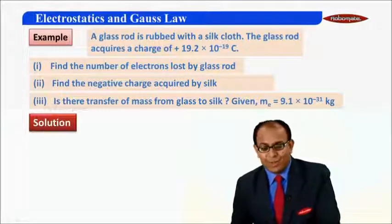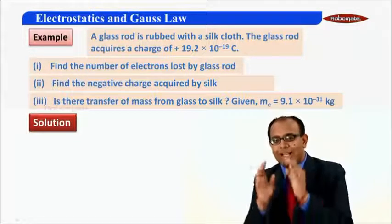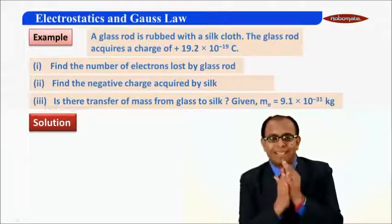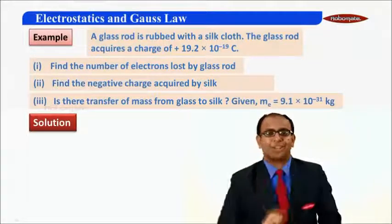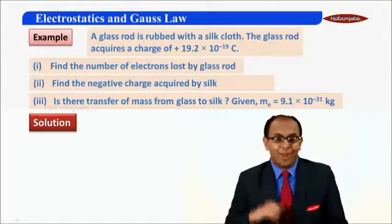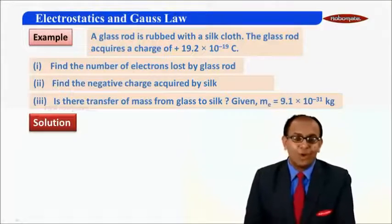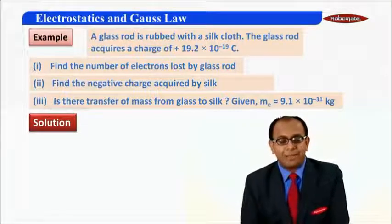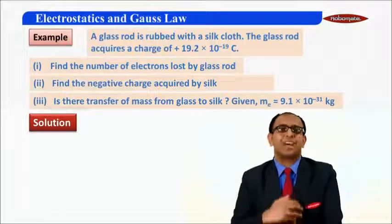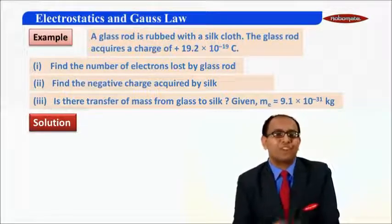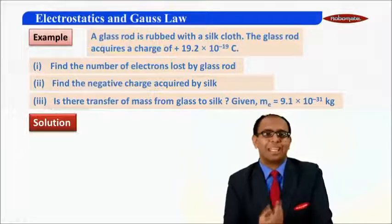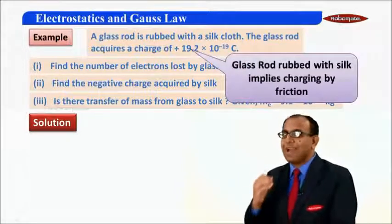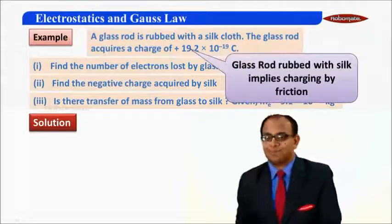Now students, this is a case of a glass rod being rubbed with a silk cloth. In this case we know when rubbing takes place, that is charging by friction must be taking place. So this is a case of charging by friction.